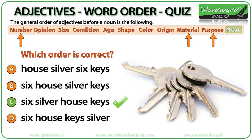Six silver house keys. Six is a number, silver is the material the keys are made of — or it could be the color too — and then we have the purpose of the keys, which is to open the house. Number comes before material, which comes before purpose.